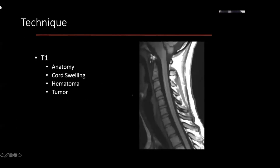A traditional T1 MRI — we pretty much use this because of its ability to show us fat. You may have heard the term 'fat is your friend.' The fact that fat courses between the various muscle groups allows us to see structures immediately adjacent to it. We typically use it for anatomy, and because blood products also have specific characteristics on T1, it's quite useful for showing things like hematoma.